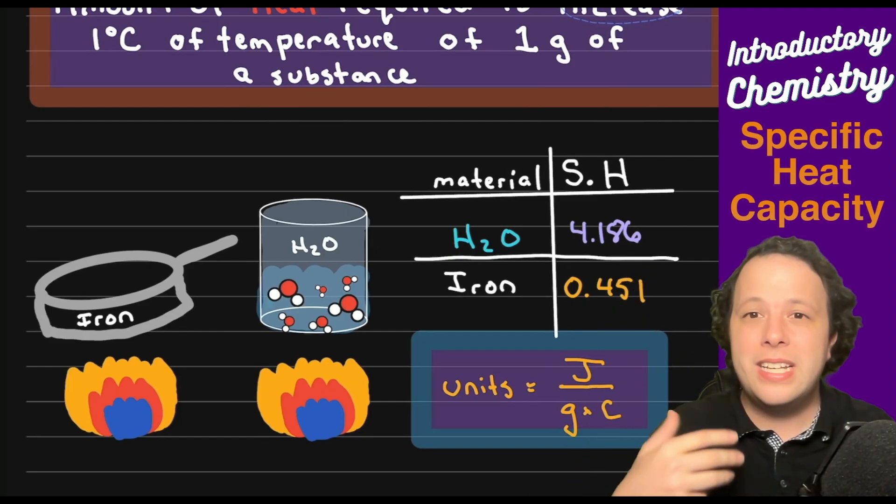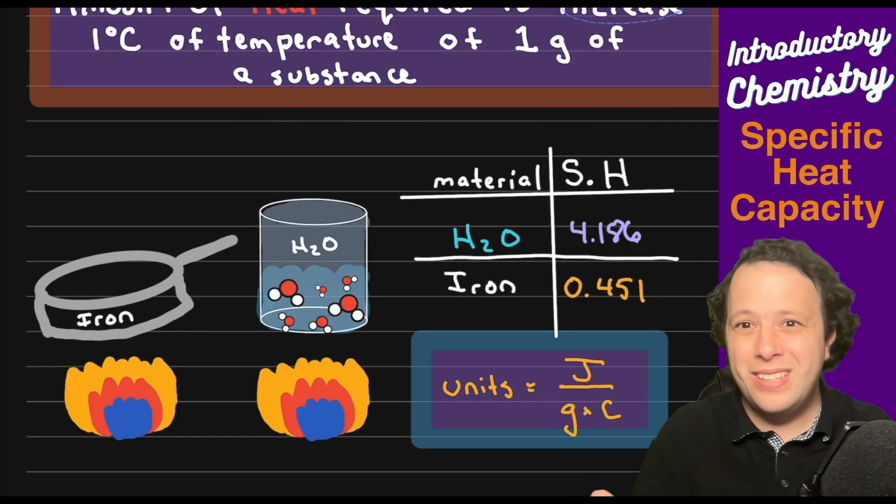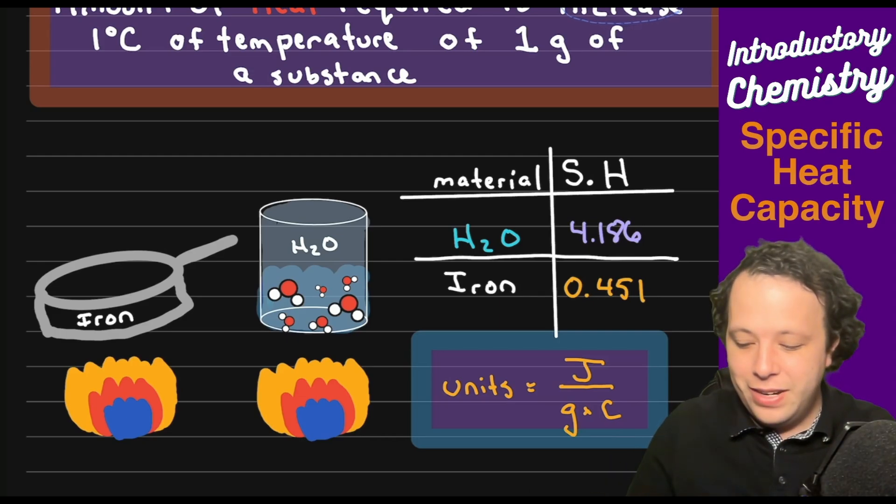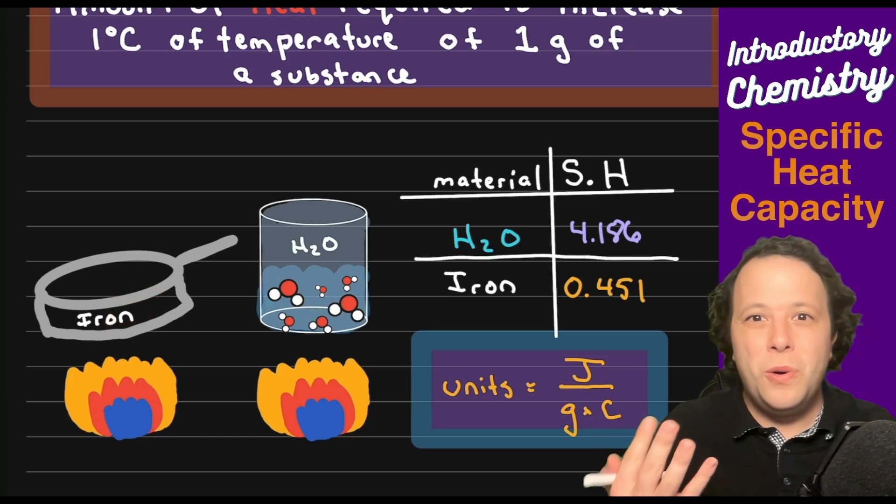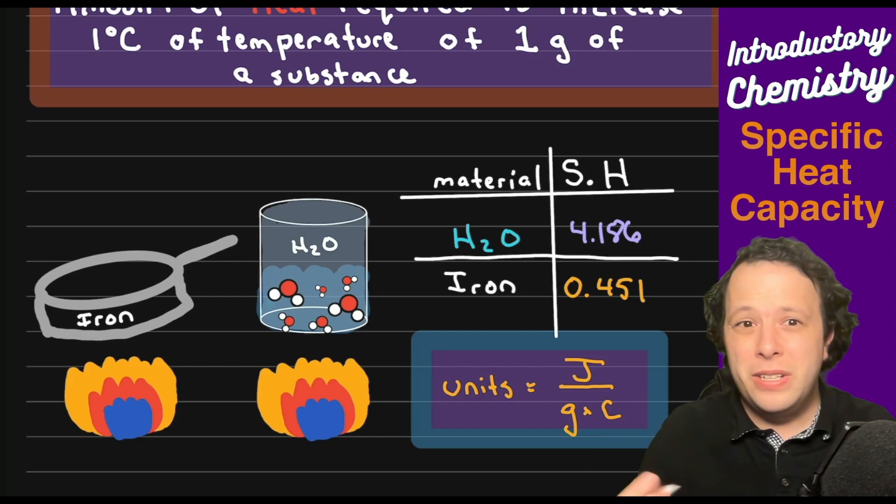These are numbers that have been measured within laboratory settings. If I look at both of these two substances, I have water on the right hand side, I have iron on the left. If I apply the same amount of heat to both, which one's going to heat faster?